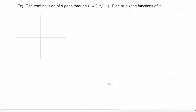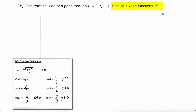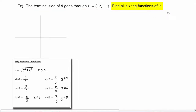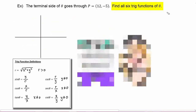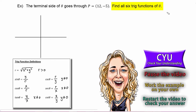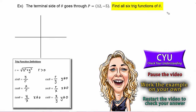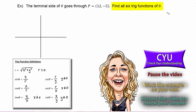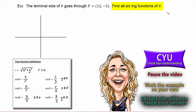In this first example, we're told that the terminal side of theta goes through the point (12, −5), and you have to find all six trig functions of theta. It's CYU time, so pause the video, work the example on your own, then restart the video to check your answer.